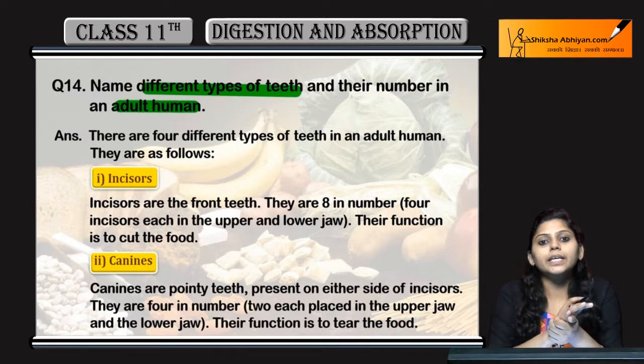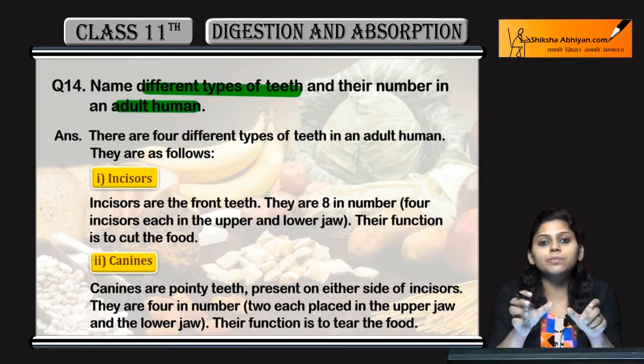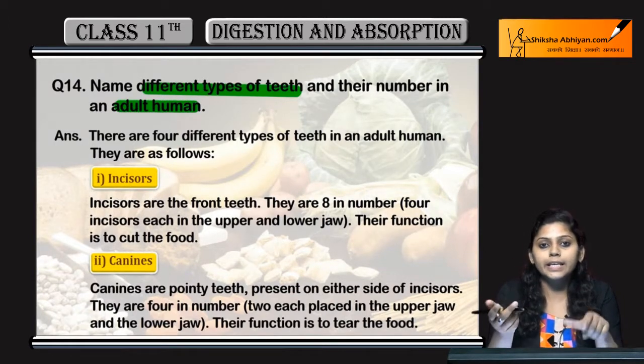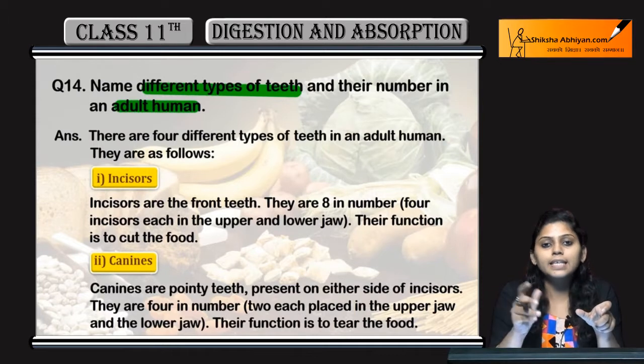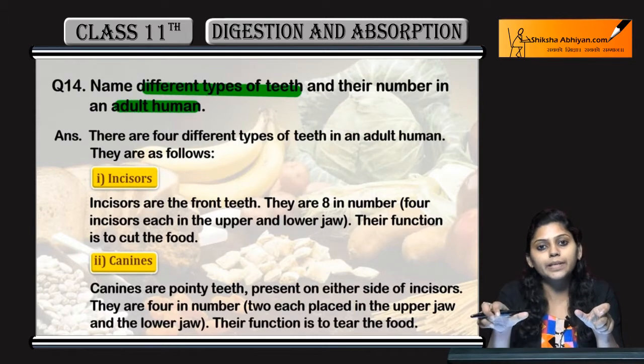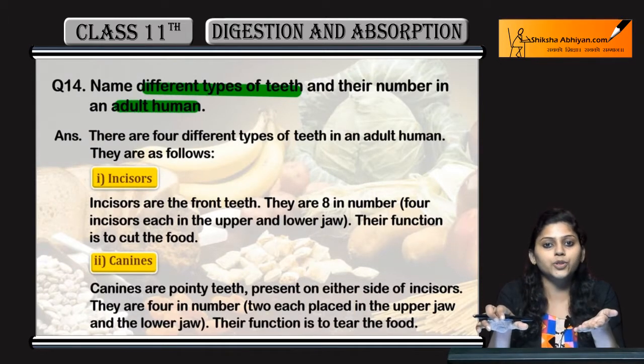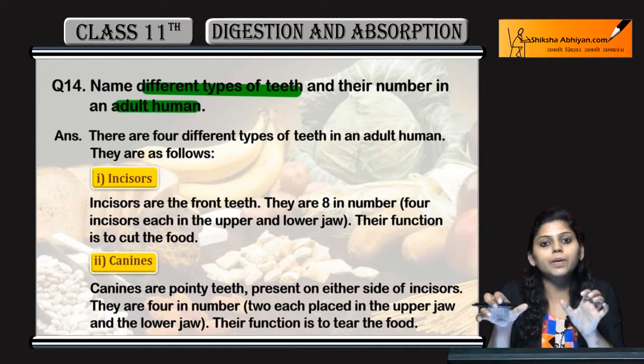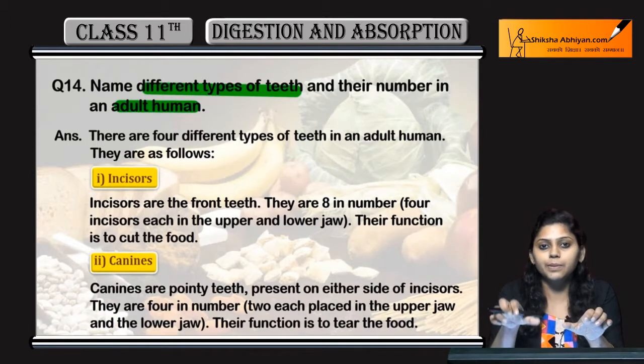We know that human beings have two sets of teeth: one milk and one permanent teeth. Permanent teeth are present in adult humans. So we have to tell about permanent teeth.